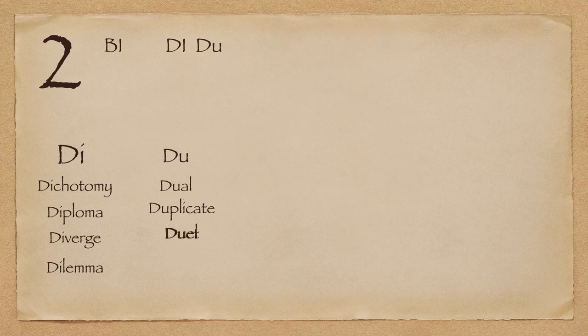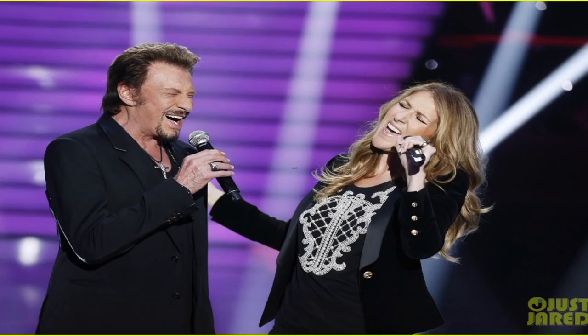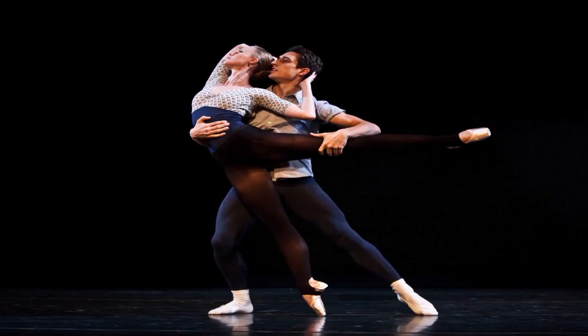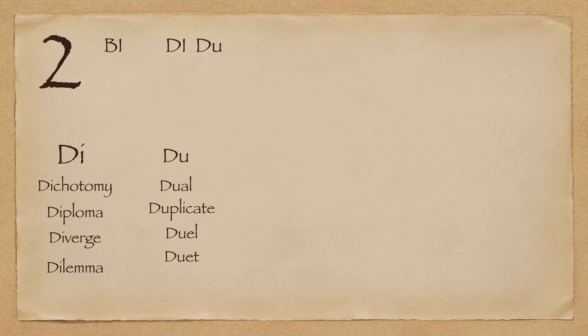Next up is duet — a common enough word. Du is two, so duet is a performance by two singers, instrumentalists, or dancers. Any kind of performance where there are two people involved is a duet. When a man and a woman sing together, that is called a duet. Though in common language people typically refer to duet only to music or singing, anywhere where there are two performers, that situation can be called a duet.